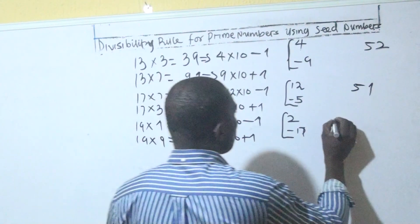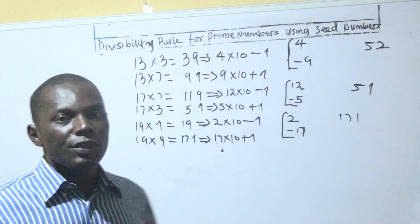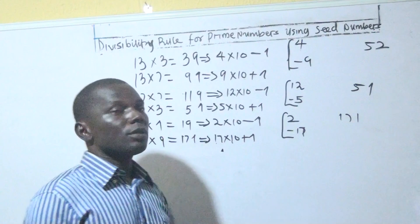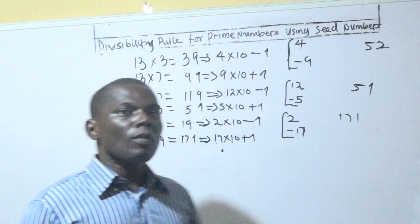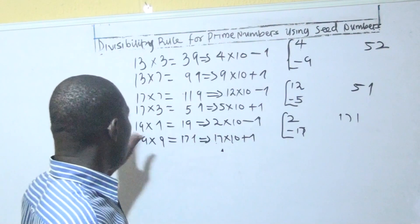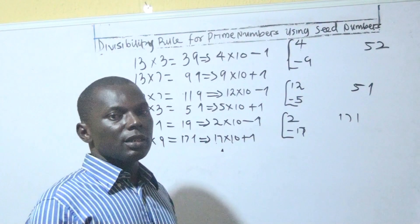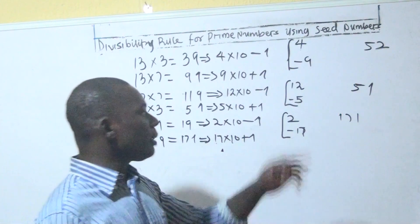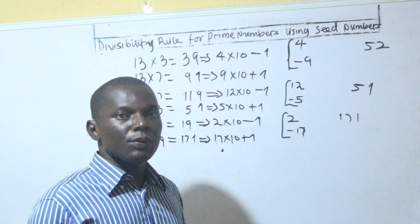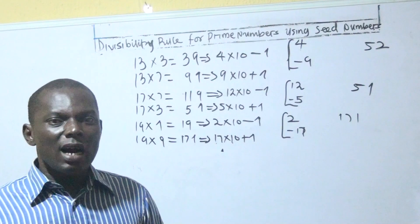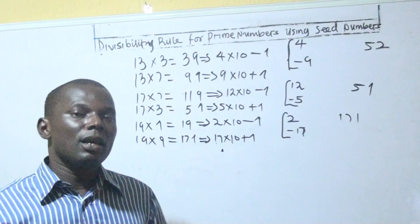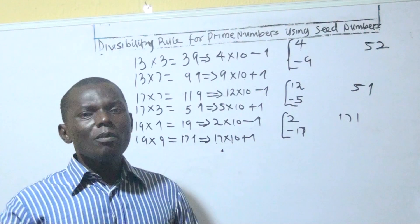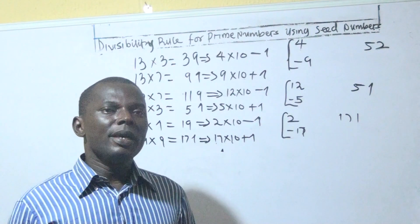Then let's assume we have 171 and want to test if it is divisible by 19. The two seed numbers are +2 and −17. Using seed +2: 2 times the unit digit 1 is 2; add it to 17, that gives 19. It is clear that 171 is divisible by 19. Using seed −17: −17 times 1 is −17; add it to 17 gives 0. Both seed numbers confirm divisibility.